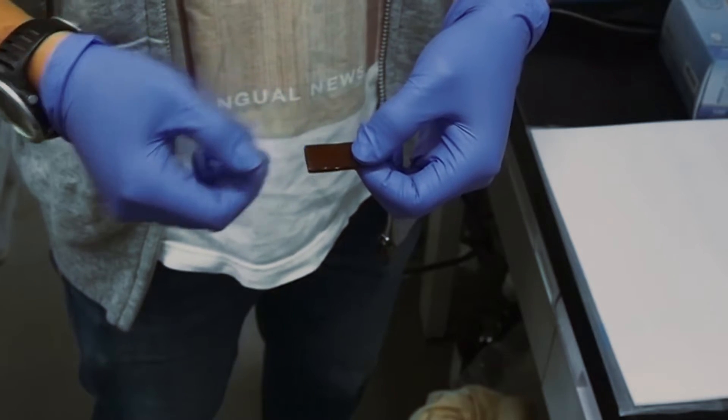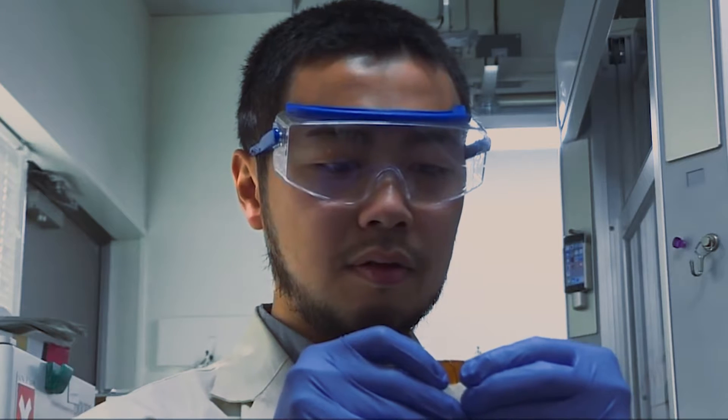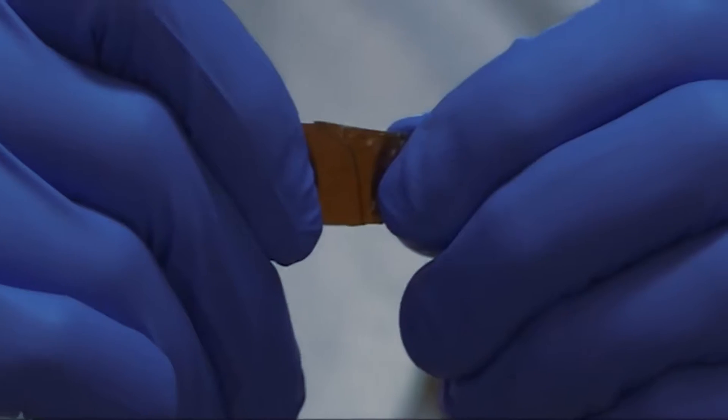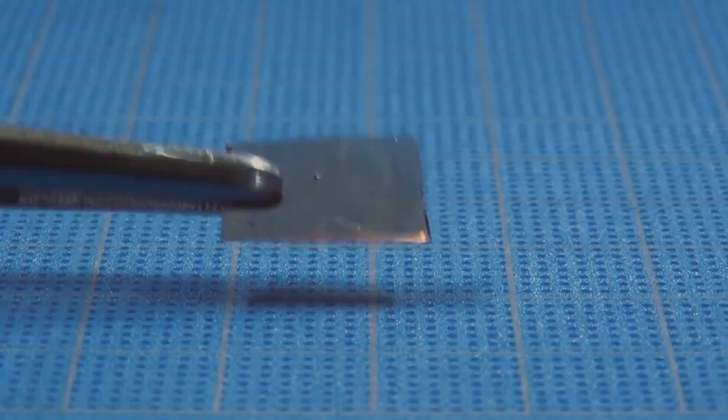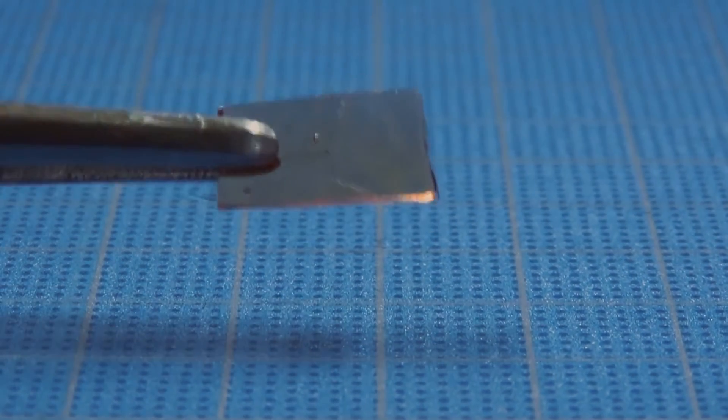It can return to its original state by simply pressing the cross-section together, even if broken. This feature can be reproduced many times at room temperature, regaining the same strength as before breaking.